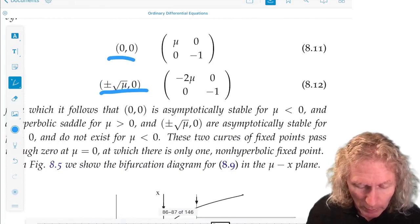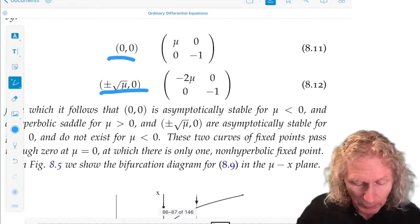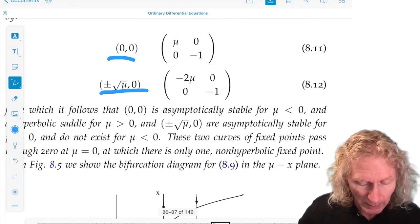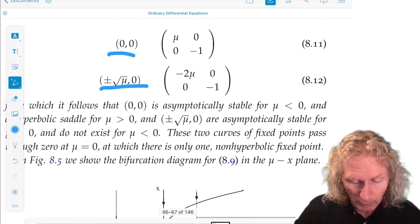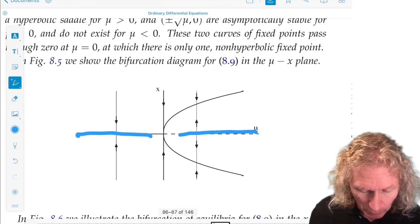It becomes unstable for μ greater than 0. We can see that at μ equals 0, all these three equilibria coincide.